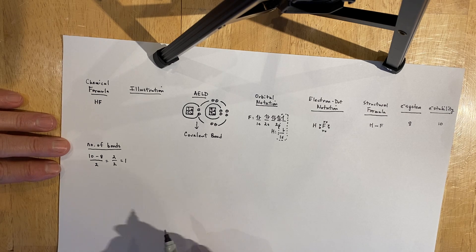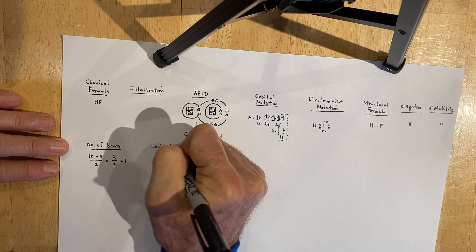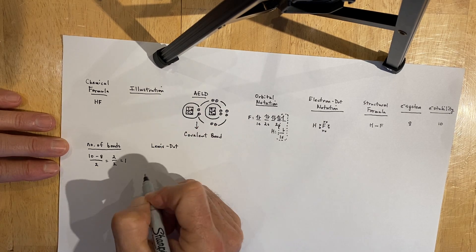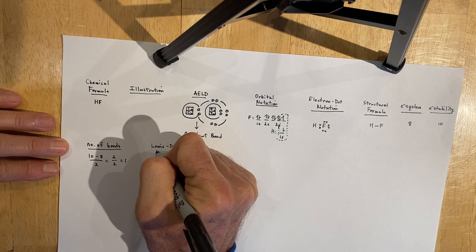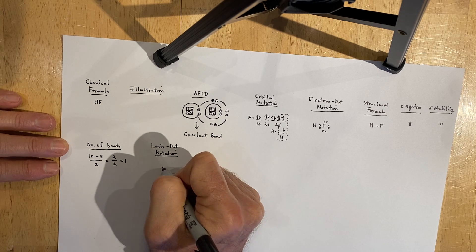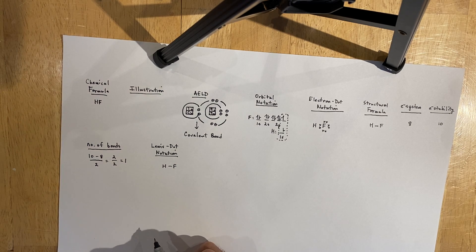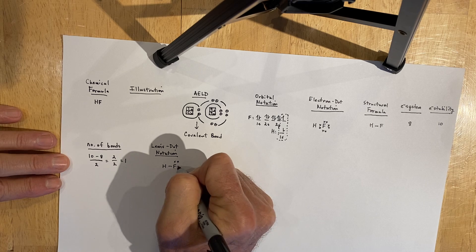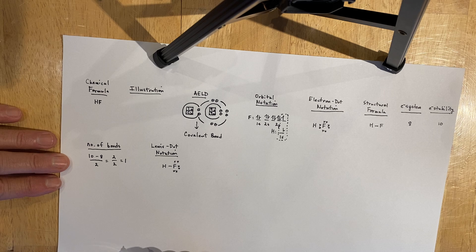Our next task is to write the Lewis dot representation, which is a hybrid diagram combining the structural formula and electron dot notation. The Lewis dot notation represents shared pairs of electrons with a line and shows lone pairs around each atom that has any. That's what our Lewis dot representation of hydrogen fluoride looks like.